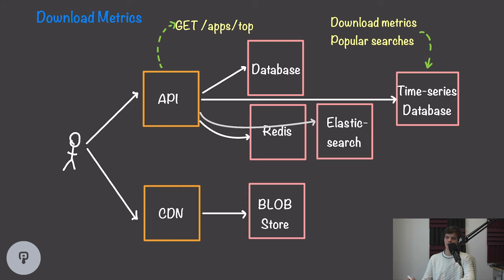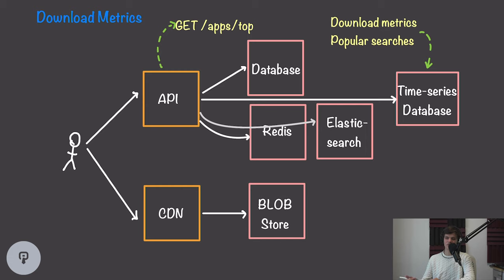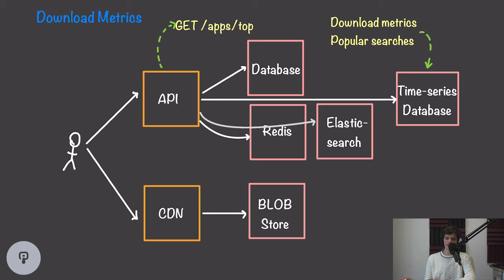The final problem is storing download metrics and top searches so users can query them. Writing every search or download event directly to our metadata database could introduce a lot of load and concurrency issues — for example, two users downloading an app simultaneously could cause conflicting updates. A more scalable approach is to use a separate time series database, which stores an entry for every download and every search. This generates a huge quantity of data, so it's important to shard the time series database across multiple nodes. Time series databases are very good at aggregating this data — for example, efficiently calculating the total downloads for a particular app. This offloads all the load of storing and updating this data from our main database.